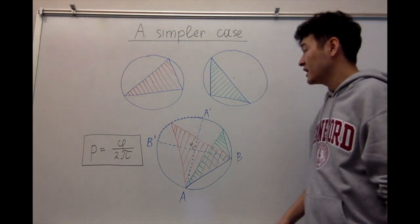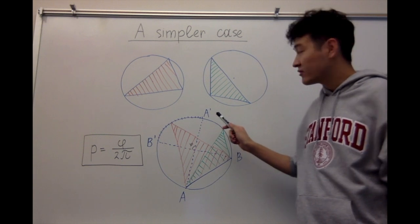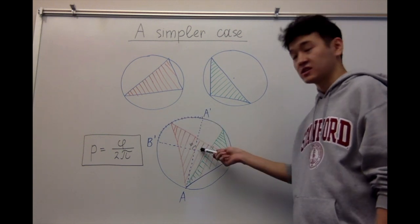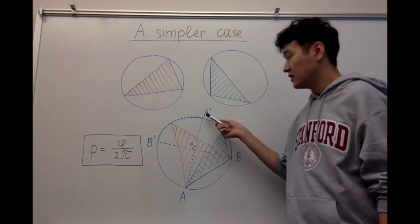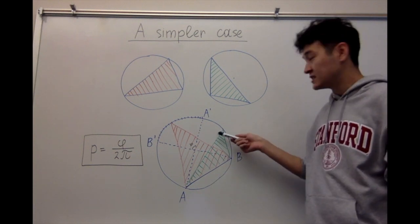if this third point lies in arc A'B', then the triangle formed from these three points contains the center. However, if the third point doesn't lie in this arc, then the triangle doesn't contain the center.